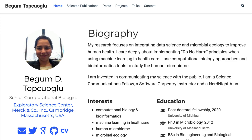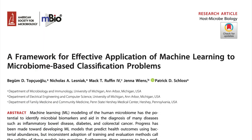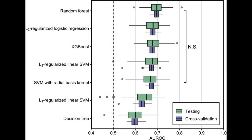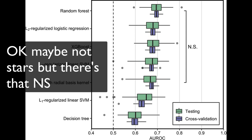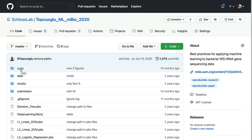I remembered that a former postdoc in my lab, Begum, wrote a great paper in mBio. In that paper, she took the same dataset at the OTU level and generated models using six or seven different machine learning approaches. One of her goals was to try multiple models and then use the one that is significantly better than the others. I noticed that on her plot she had stars, and to me stars means significance. So I figured her code must have code for testing significance. Being well-trained, I knew the code for calculating the p-values would be there, so I went to her GitHub repository for that paper.